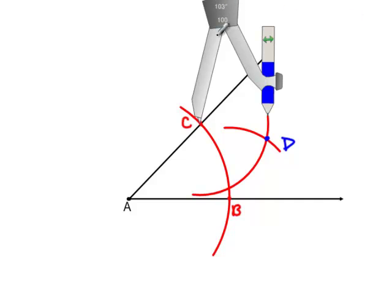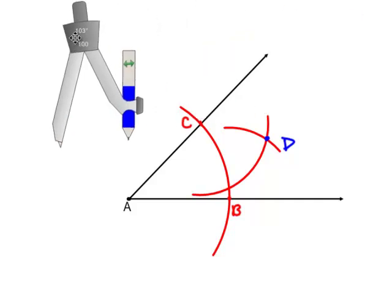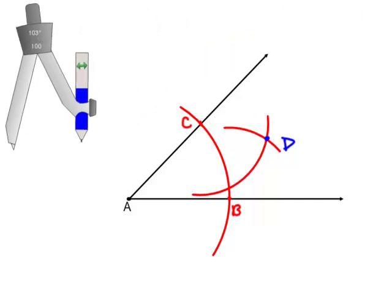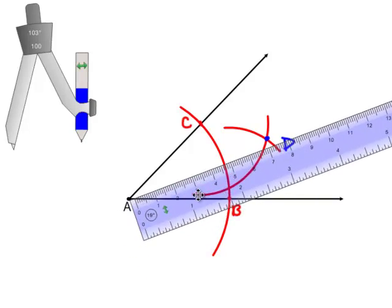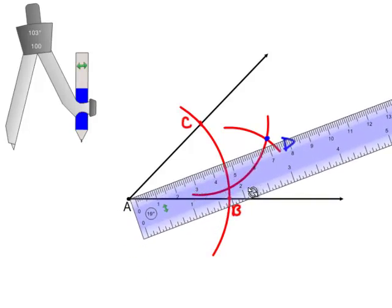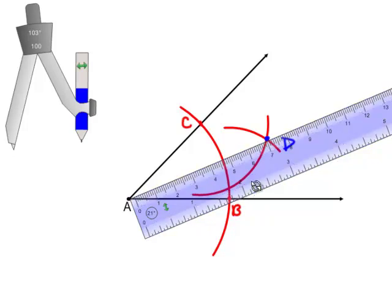Then taking your straight edge, place your straight edge such that you make a line that goes through points A and D.